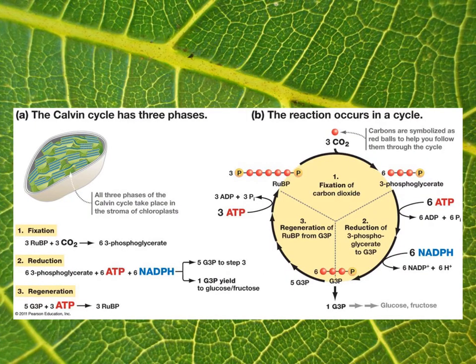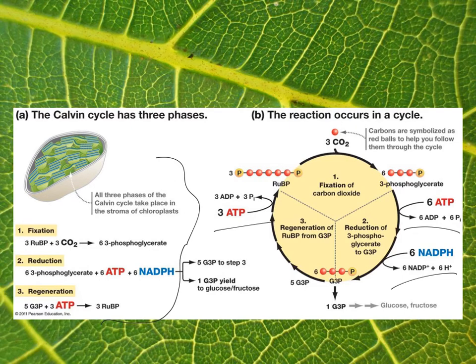This diagram is a good opportunity to write things down — it talks about where things are, what's needed, and where the process occurs. It has a summary: for fixation, you need 3 CO2. For reduction, we need 6 ATP and 6 NADPH, and that eventually gets us 1 G3P. Then we need 3 more ATP to regenerate the original molecule. The whole process requires 9 ATP total, 3 CO2, and 6 NADPH.